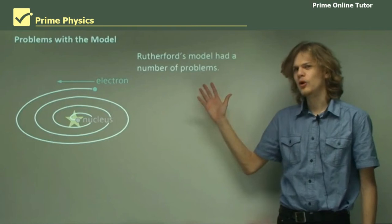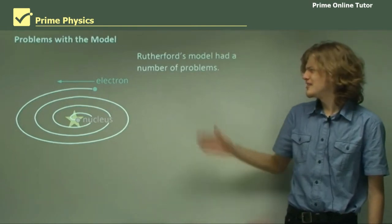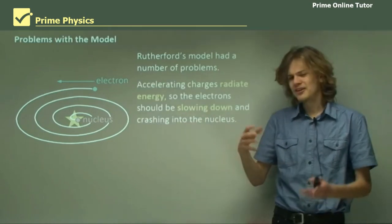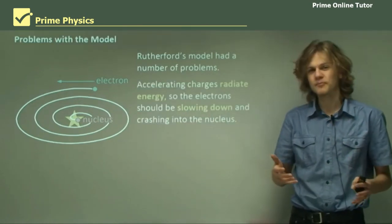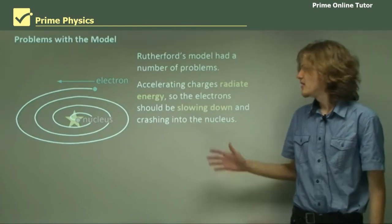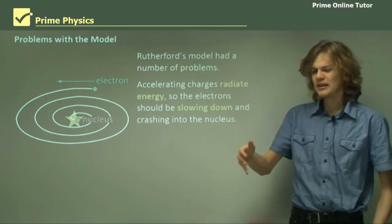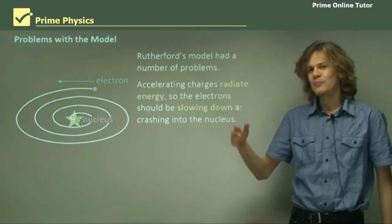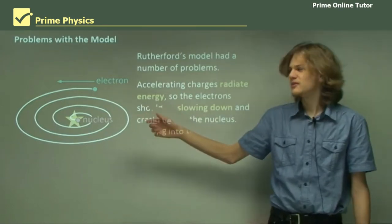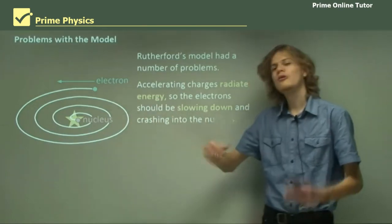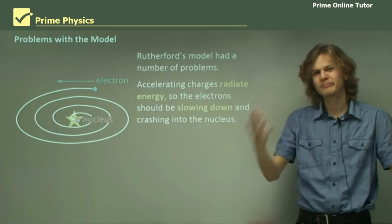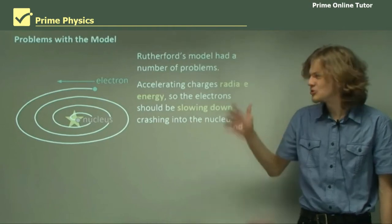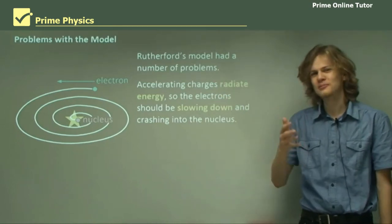Rutherford's model had a few problems, which I'll go into now. We can see a diagram of one of them over here. The thing is, accelerating charges radiate energy. And this is a known fact of accelerating charges. So, the electrons should be losing energy and slowing down as they're moving in a circle. And because they're slowing down, it means that they would get close to the nucleus. And eventually, they'd spiral all the way in and smash into the nucleus. And the atom would be destroyed. As we know, that doesn't happen. So, this model can't be completely right.